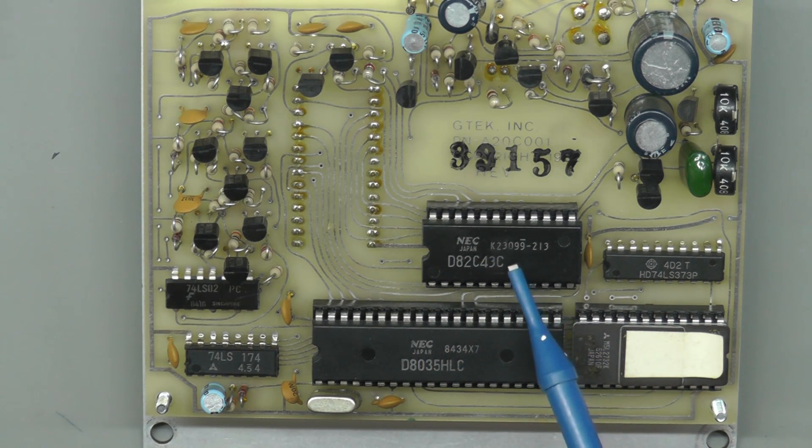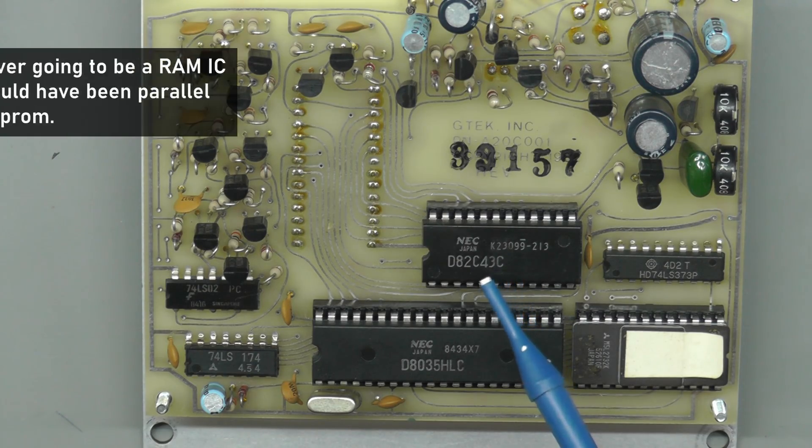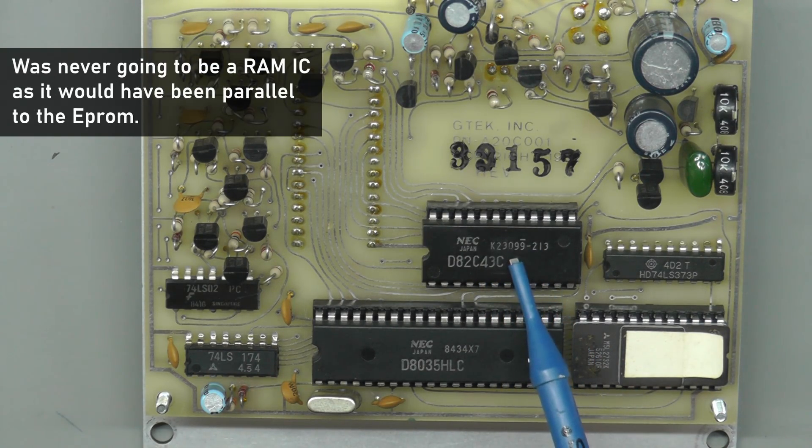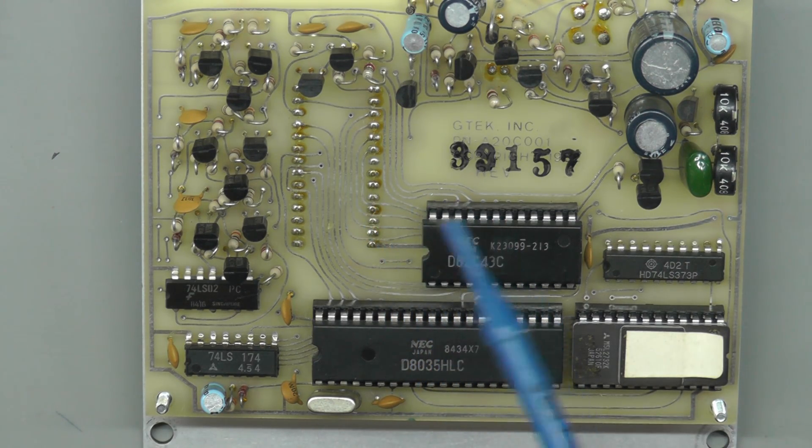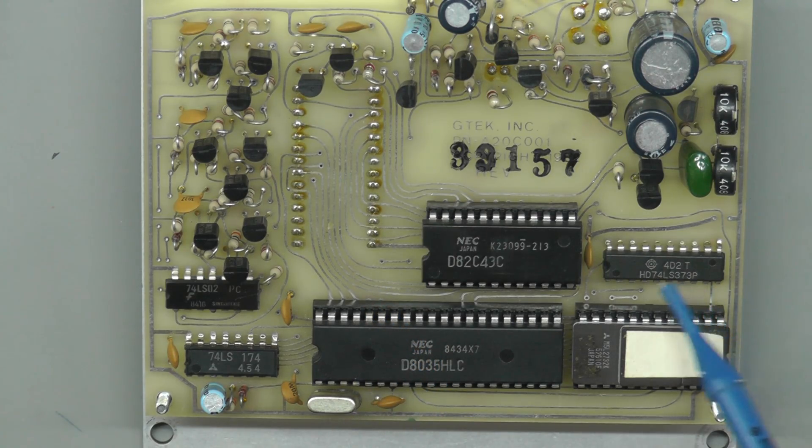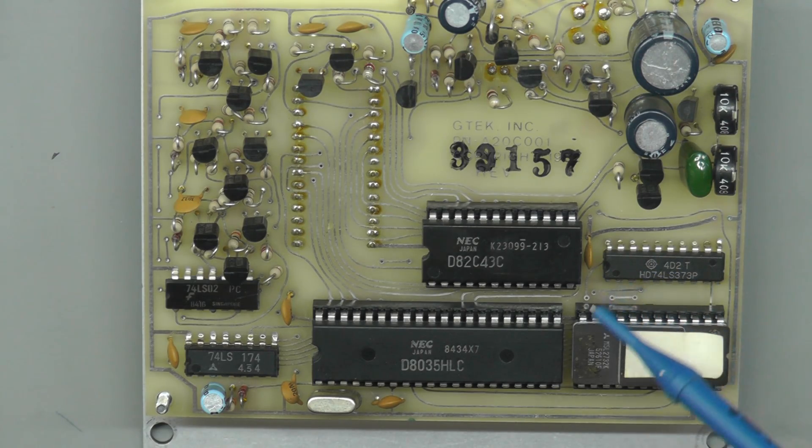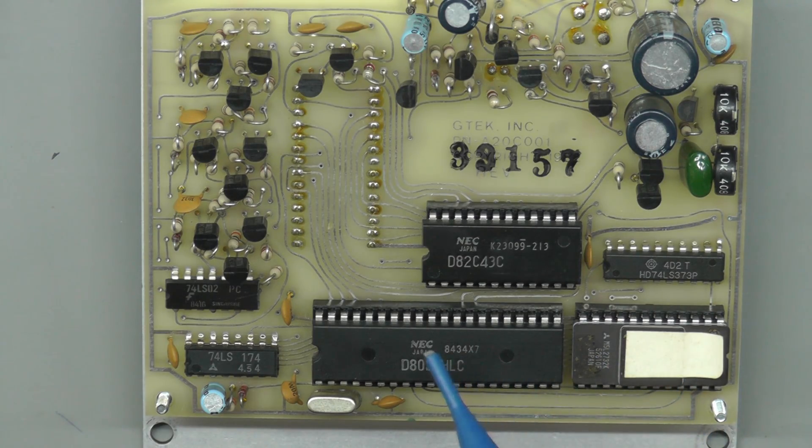Over here we've got an 82C43. When I first looked at this I thought it was a RAM, an 8-bit RAM IC, but it's not. It's an I/O expander, and probably what that's for is there's not enough I/O capability on the microprocessor itself to connect to the various pins on the ZIF socket. You've also got down here a 74LS373, that's a latch, and that'll be used to tie in the EEPROM into the microprocessor. This is a ROM-less microprocessor.